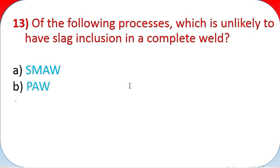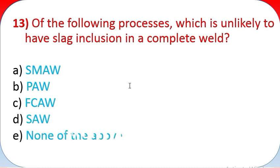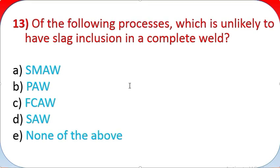Question 13: Of the following processes, which is unlikely to have slag inclusion in a complete weld? A - SMAW, B - PAW, C - FCAW, D - SAW, E - none of the above.